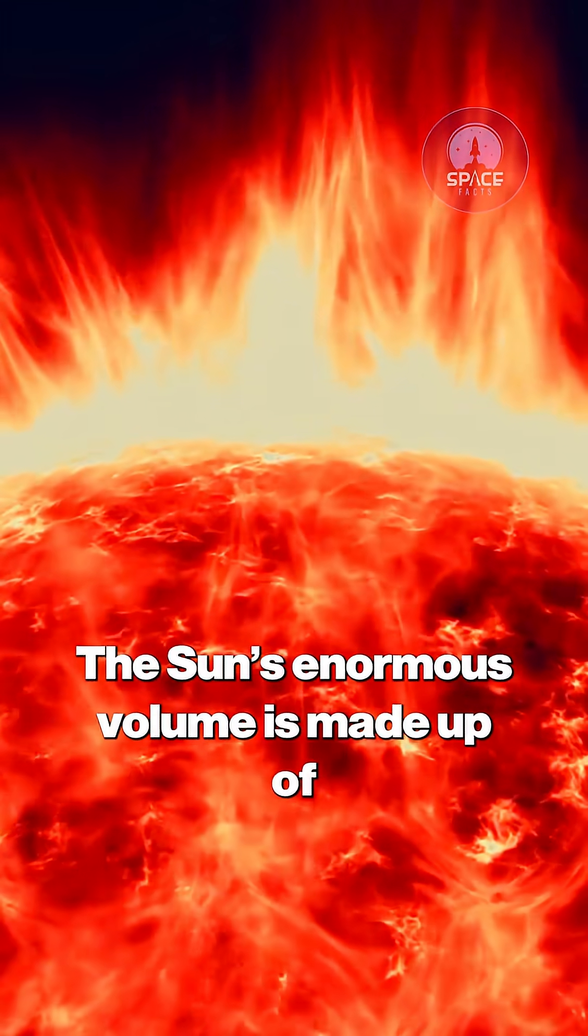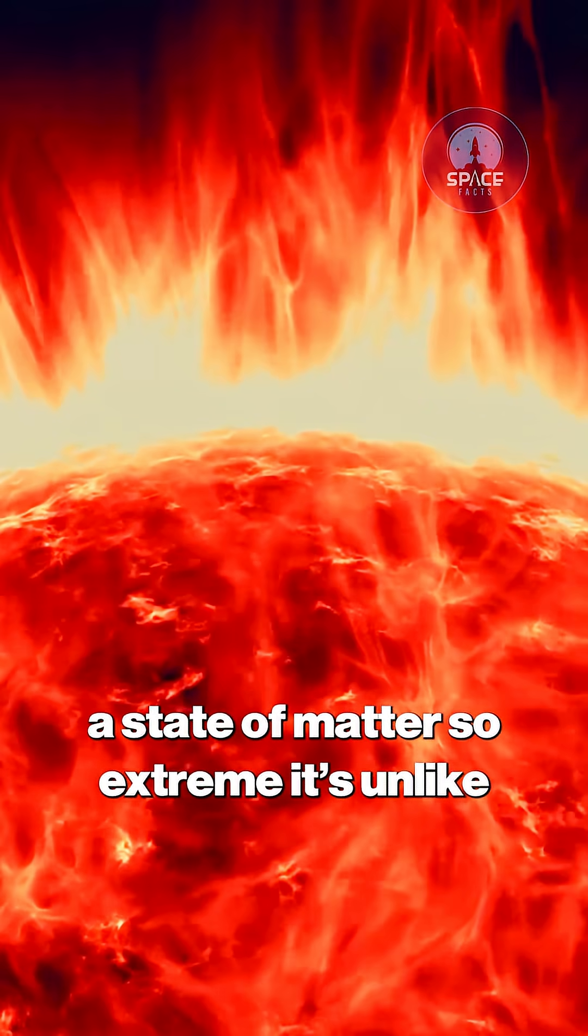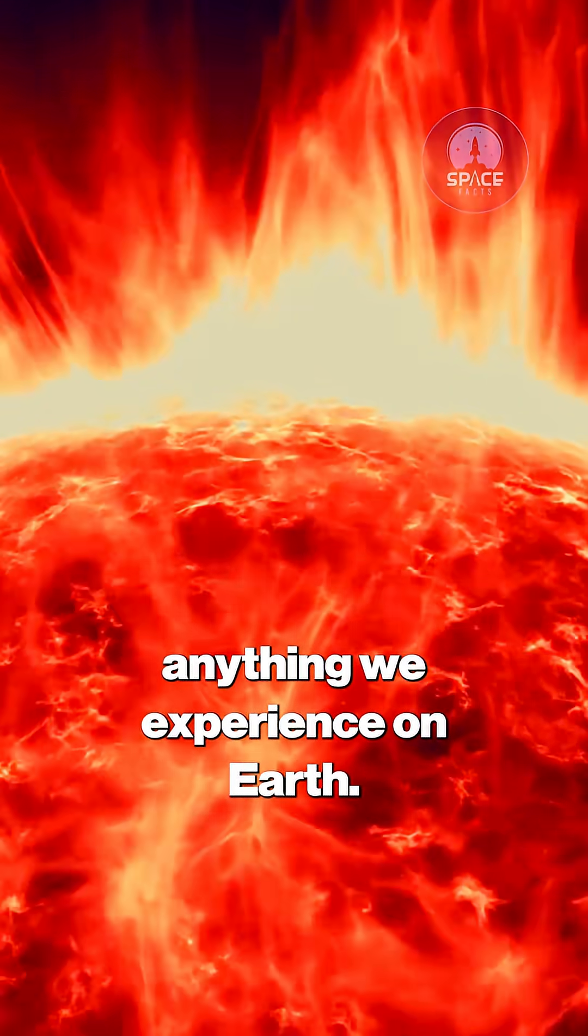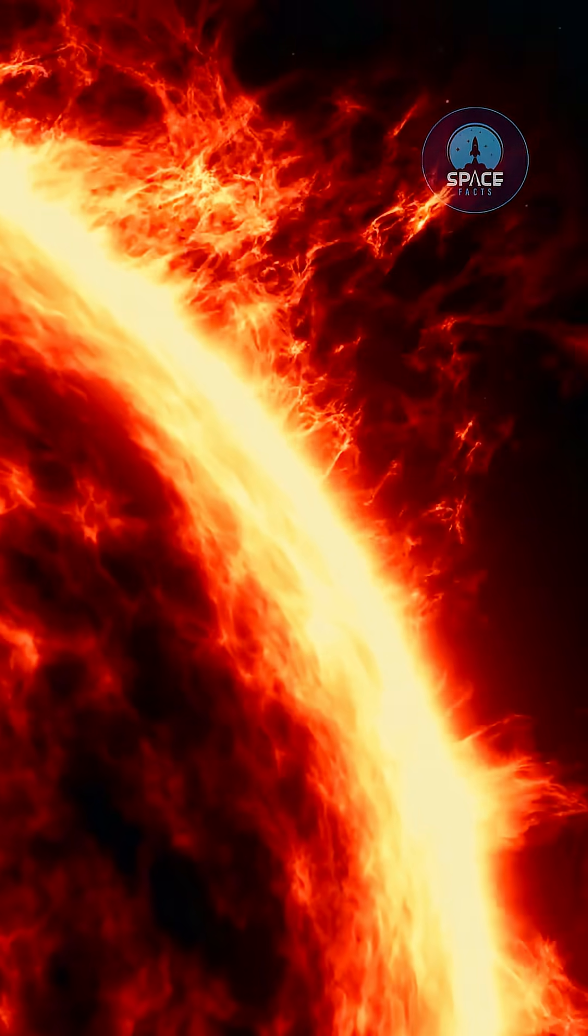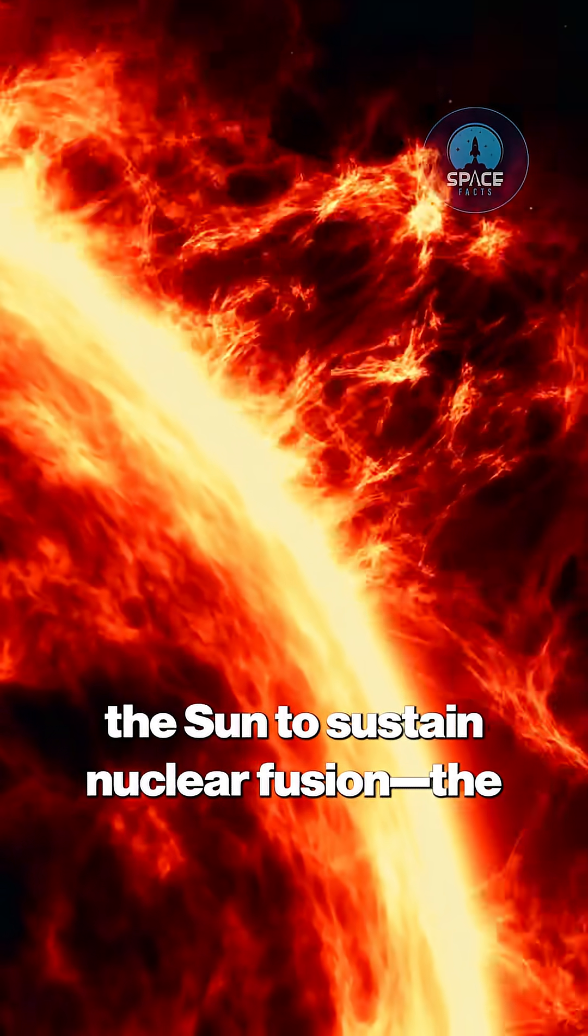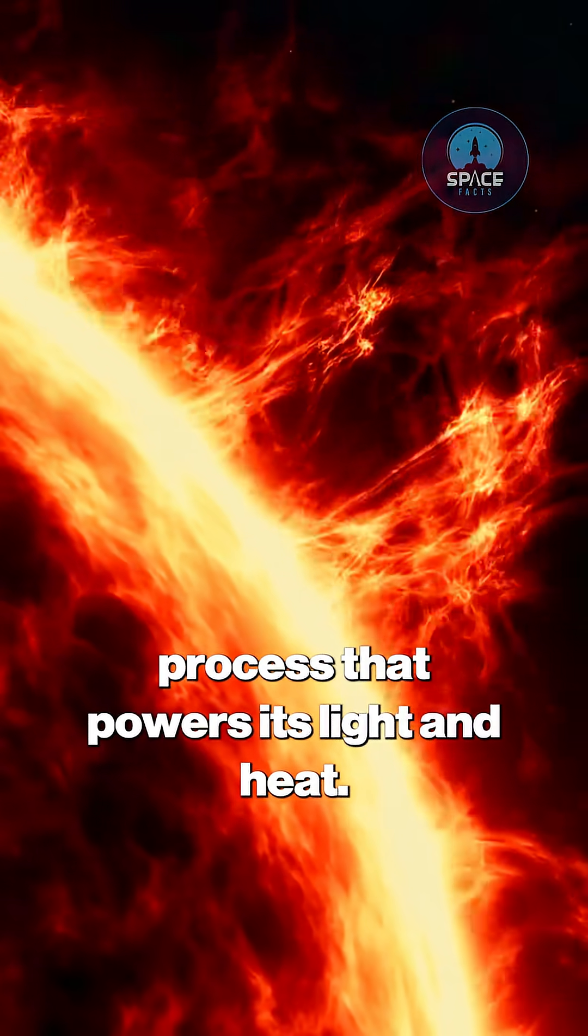The sun's enormous volume is made up of scorching hot plasma, a state of matter so extreme it's unlike anything we experience on Earth. This immense size and energy output allow the sun to sustain nuclear fusion, the process that powers its light and heat.